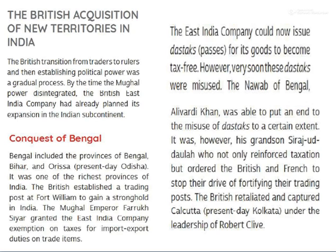However, his grandson Siraj ud-Daulah not only reinforced taxation but ordered the British and French to stop fortifying their trading posts. He tried his best to stop all these wrongdoings of the British. Fortify means becoming stronger. The British were becoming richer and richer while the Nawab's power was going down. They were trying to reclaim their wealth, but the British were very strong. Robert Clive was the Governor General at that time, and he fought with the Nawab and recaptured Kolkata.